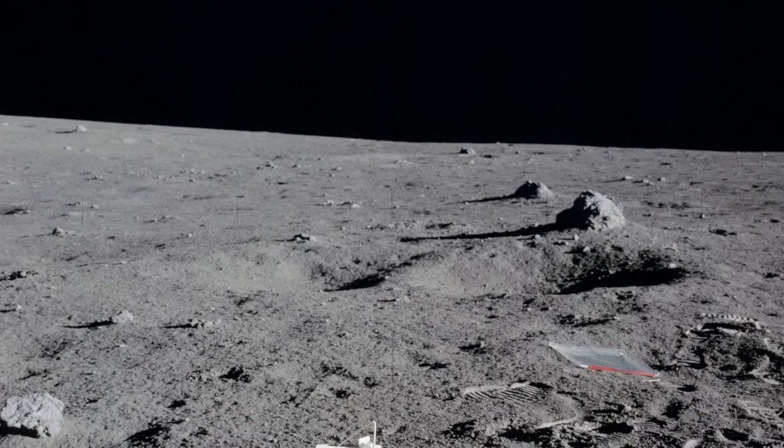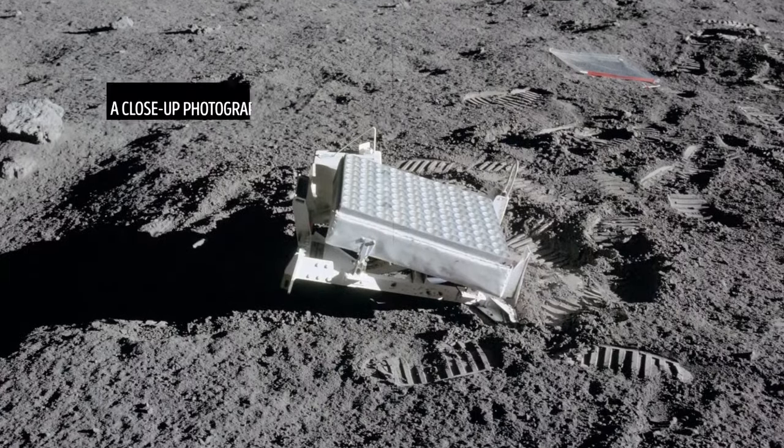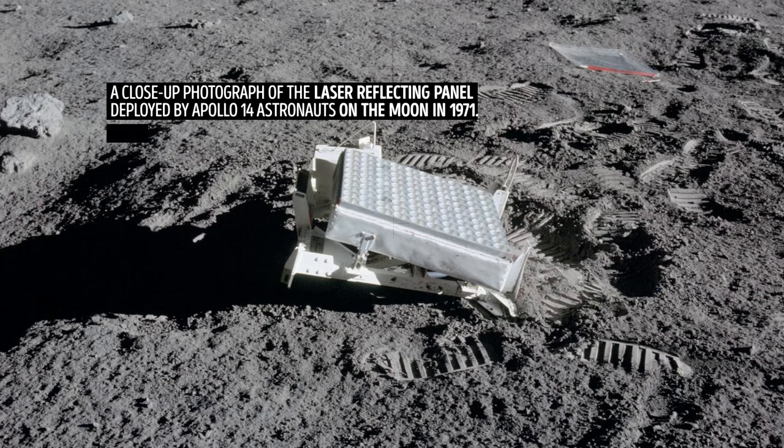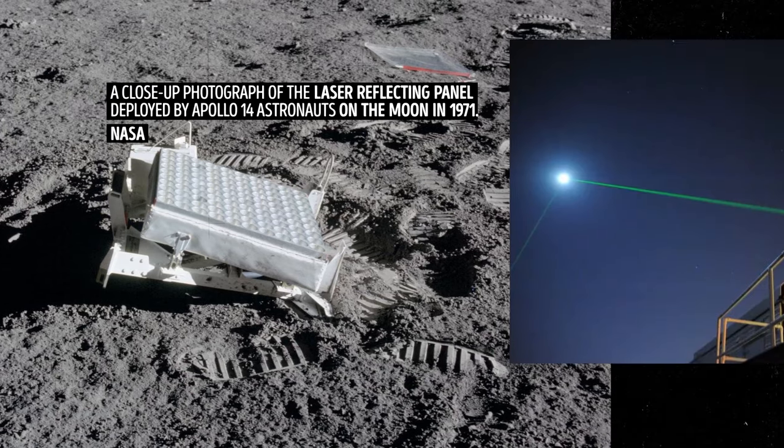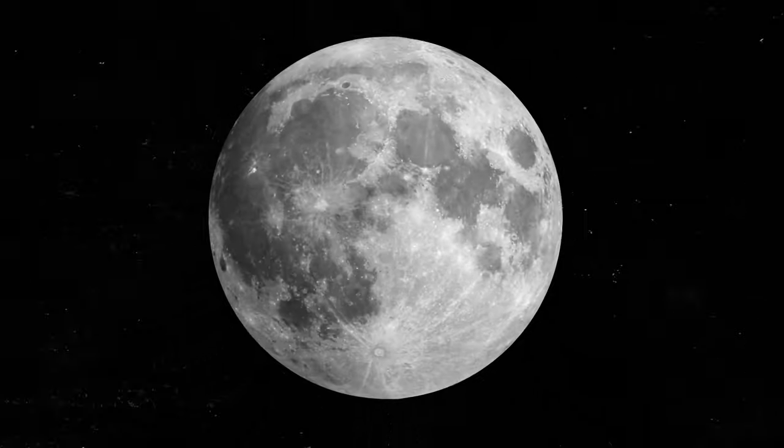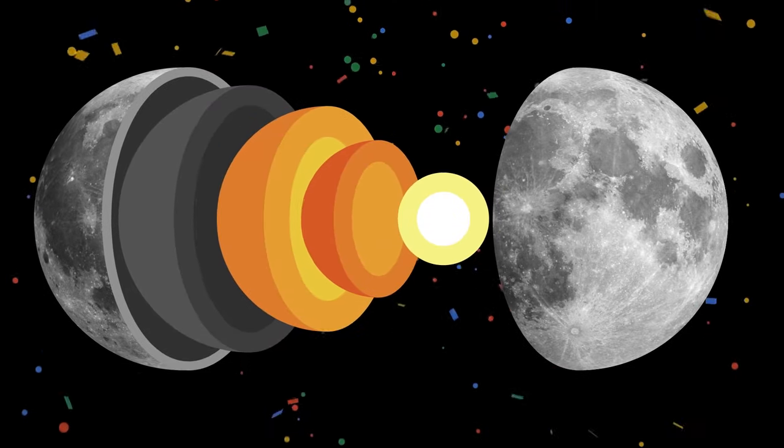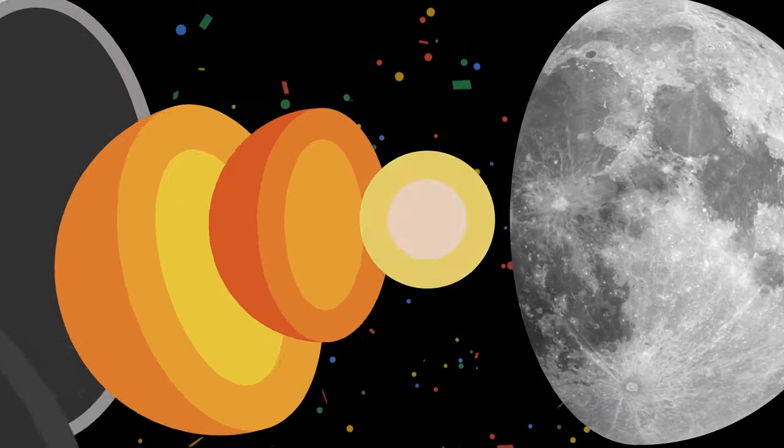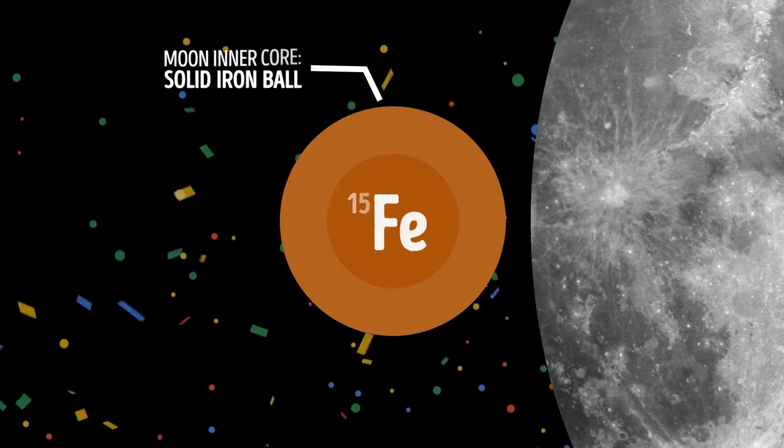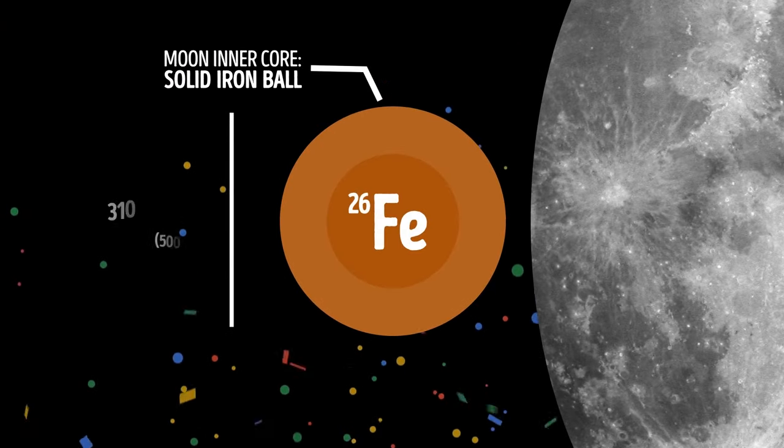To check the moon's deep interior, scientists also use something called laser ranging. This method measures the distance between the surface of the Earth and the moon very precisely. And ta-da! Our natural satellite's inner core is a dense, solid ball made of iron, just like Earth's.